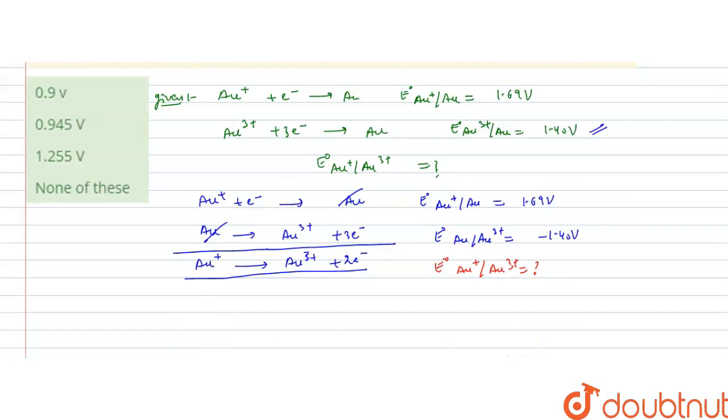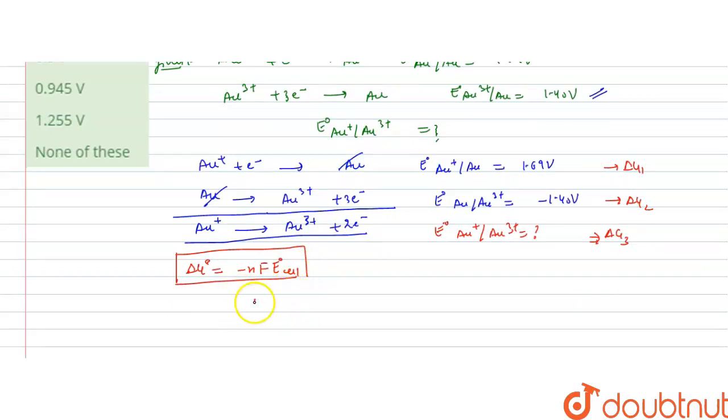We know that delta G0 is minus N F E0 of cell. That standard change in Gibbs free energy equals minus the number of electrons that are involved, F is Faraday constant, E0 cell is the standard electrode potential. If we write delta G1 for this reaction and delta G2 for this reaction and delta G3 for this final reaction, we can say that delta G3 will be the sum of delta G1 and delta G2 because we have added these two equations.